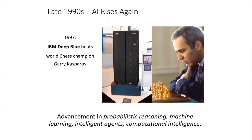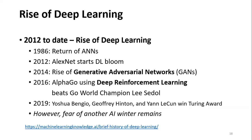In the late nineties — 1997 — Deep Blue beat Gary Kasparov at chess. This wasn't based on deep learning; it built up historical information by playing against itself. Then since 2012 we've seen the current rise of AI, including the return to artificial neural networks in 1986. The key inflection point was 2012, when the deep learning architecture AlexNet came out of the University of Toronto.